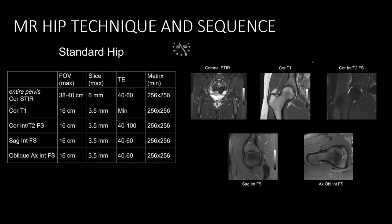We should have at least one entire pelvis coronal sequence to see the hip joint and around the hip joint so that we should not miss any pathology. Then we should have one T1 without fat sat coronal to see the marrow pathology, and we should have coronal PD fat sat to see any abnormality, especially the hip joint. The coronal images are very good for the labrum, ligamentum teres, and other structures.